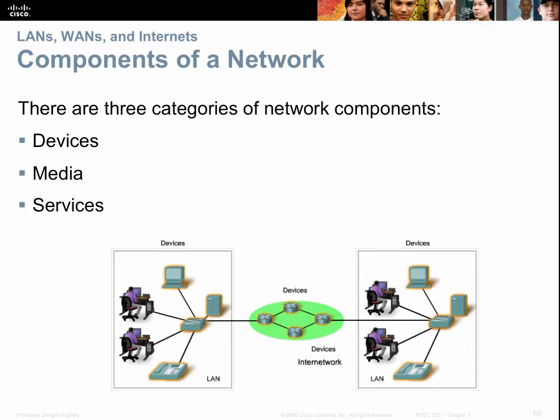The components of a network fall into three categories. First are devices — physical items like printers, phones, PCs, servers, switches, and routers. Second is media — the cables connecting devices, which could be radio frequency, Wi-Fi, cellular, copper such as T1 or Ethernet, or fiber optic. Third are services — things like email, file sharing, or printer sharing.